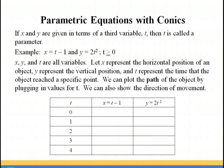We're going to assume that t is greater than or equal to 0. Notice that x, y, and t are all variables. In this case we're going to let x represent a horizontal position of an object, y represent the vertical position, and t is going to represent the time that the object reached a specific point. By using the third variable t, we can plot the path of the object by plugging in specific values for t, and we can also show the direction of movement.